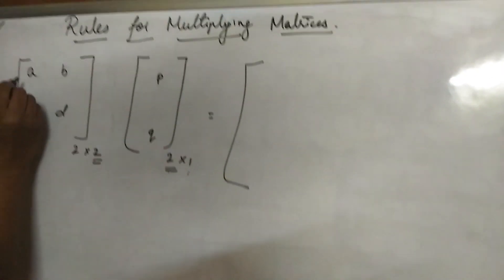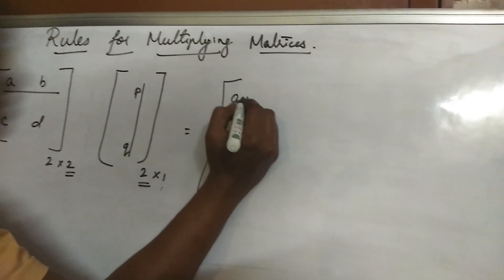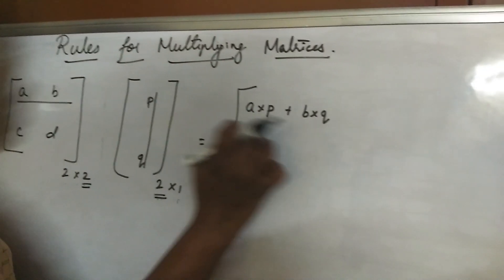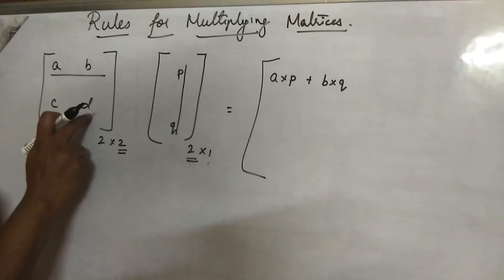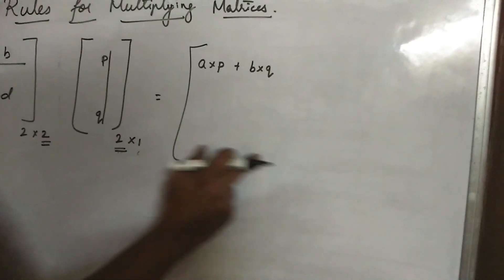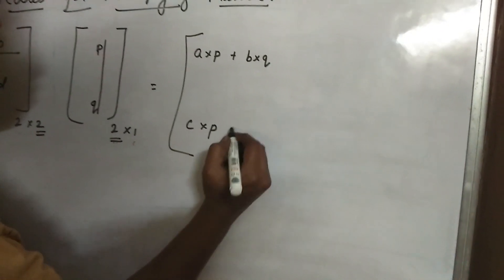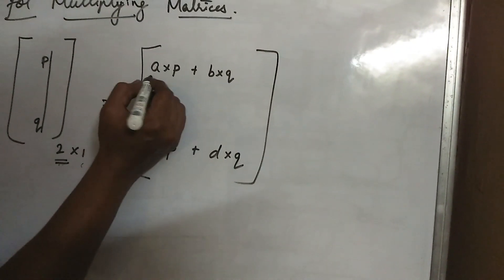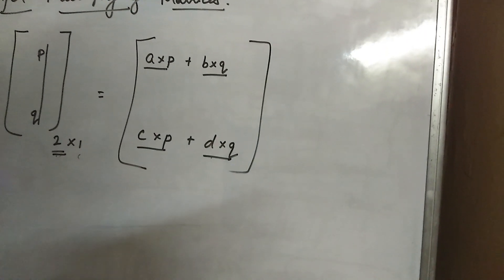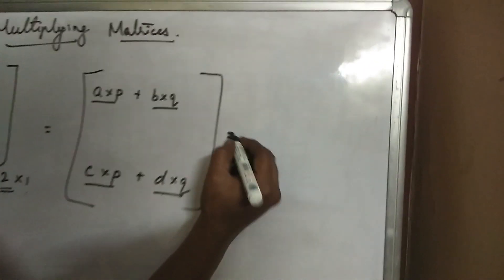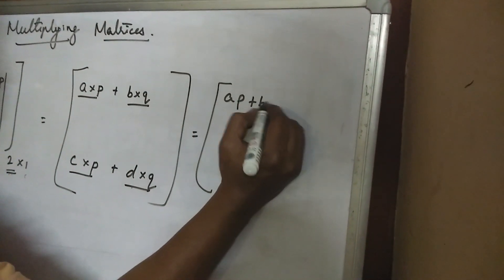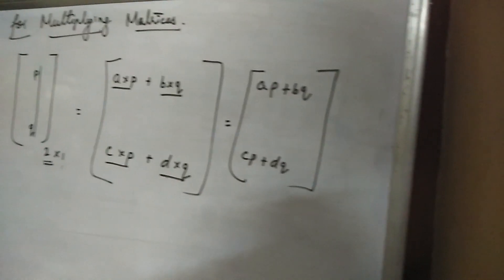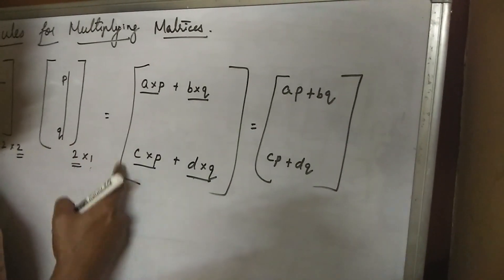So how will we multiply? We take first row, first column: A into P plus B into Q. Then second row, first column: C into P plus D into Q. So the answer matrix will be: A·P + B·Q, and C·P + D·Q. Here the order is 2 by 2 multiplied by 2 by 1, giving answer 2 by 1.